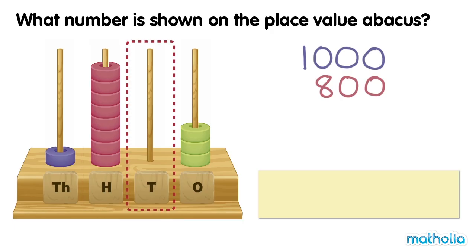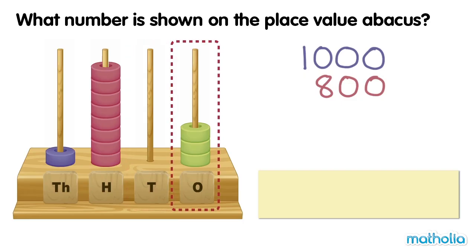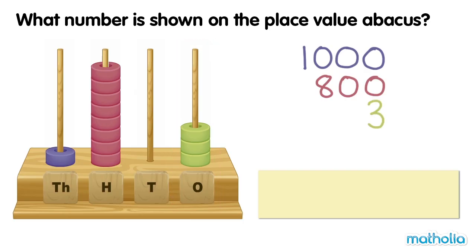In the tens place, there are no beads. The value is zero. In the ones place, there are three beads. The beads have a value of three. The number shown on the place value abacus is one thousand, eight hundred and three.